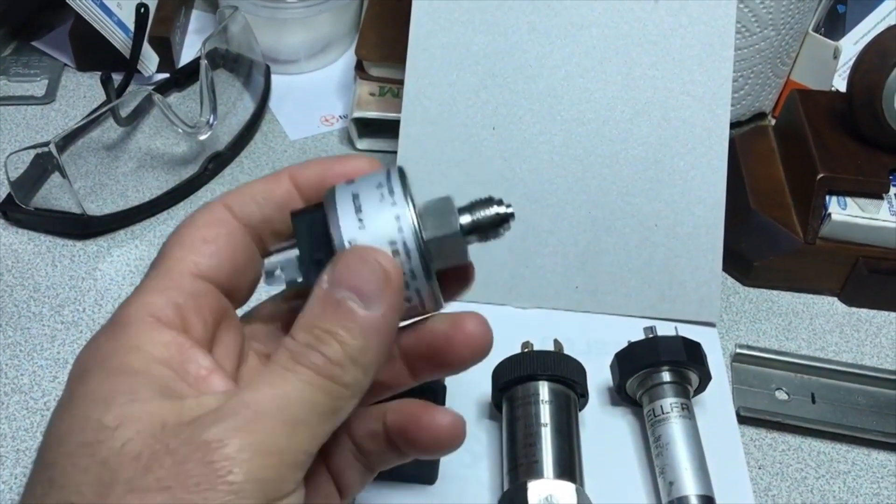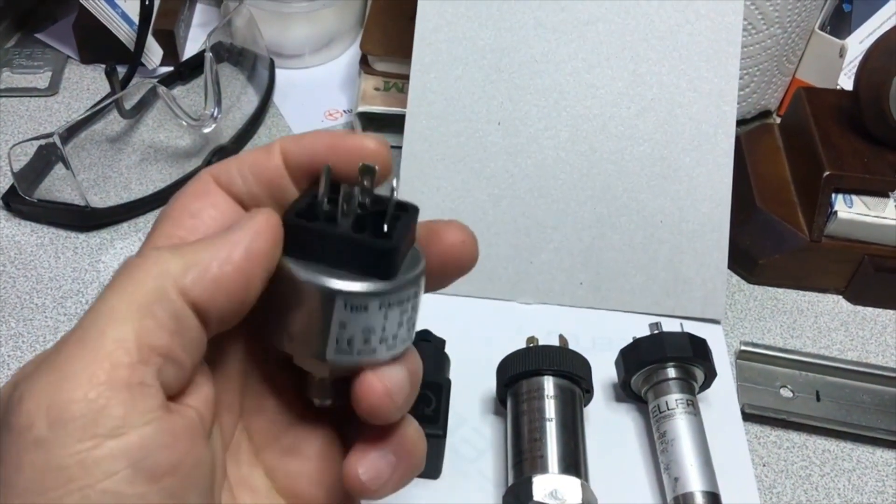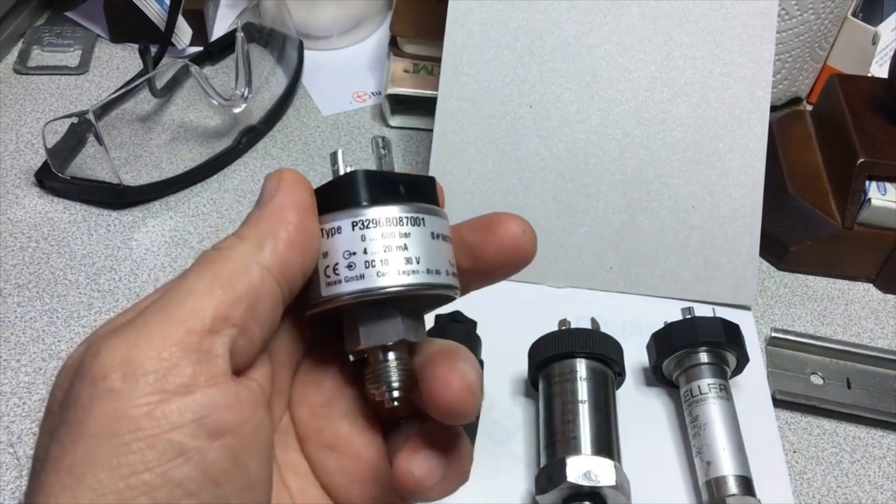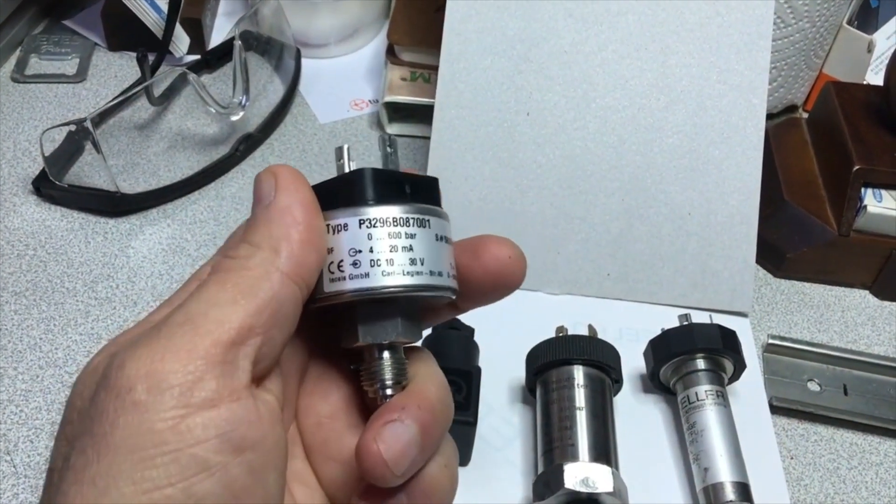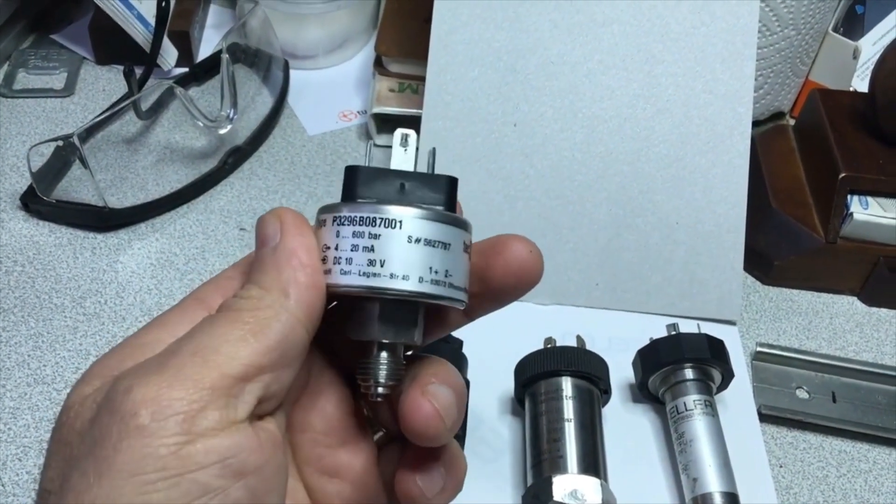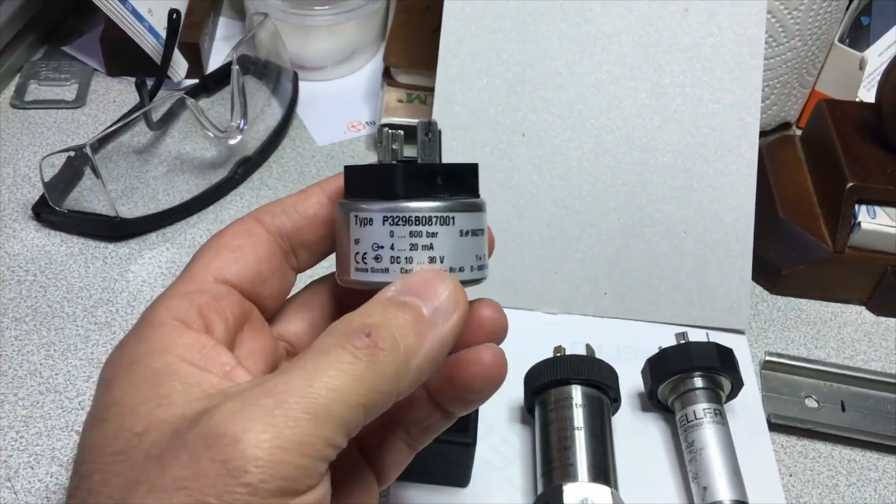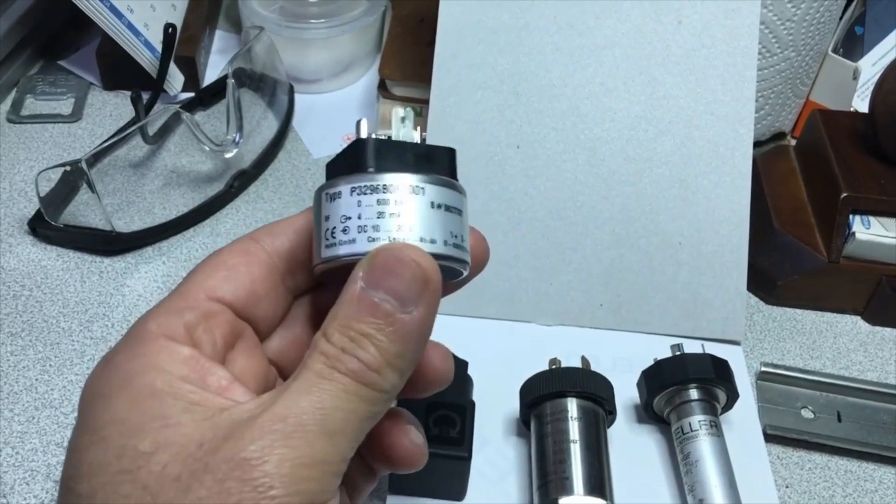However, 4 to 20 milliampere sensors are the most reliable and most accurate. Let me try to explain it this way. Types that give 0 to 10 volts output make accurate measurements at close points, but when we want to carry them to long distances, we may read incorrect values because voltage drops will occur on the cable.